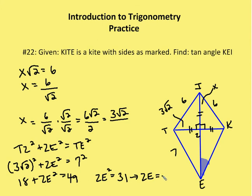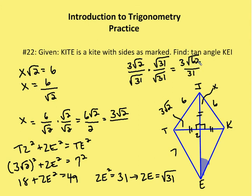The tangent of KEI is going to be the opposite side, 3√2, over the adjacent side, which is ZE, which is √31. We need to rationalize the denominator, so we multiply both sides by √31, and I end up with 3√62 over 31. I don't believe there are any perfect squares in 62, so the result is 3√62 over 31. That's it. Those are your two problems for chapter 9-9. We have some more in trigonometry in chapter 9-10, so come and join us for a couple more practice problems.